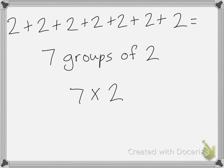Here I have 7 groups of 2: 1, 2, 3, 4, 5, 6, 7. And so I would say 7 times 2.